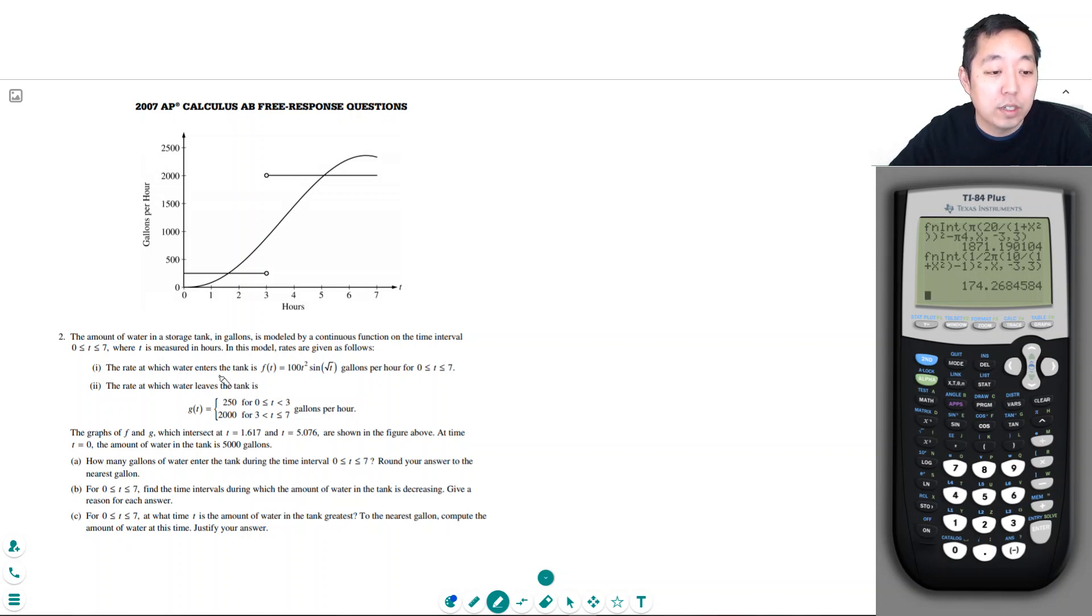In this model, rates are given as follows. The rate at which water enters the tank is this, gallons per hour. The rate at which water leaves the tank is this. The graphs of f and g intersect at this time and this time as shown in the figure above. And at time t equals 0, the amount of water in the tank is 5,000 gallons. So this function, this is f, this is entering, and this one is g of t here. And that's how much is leaving.